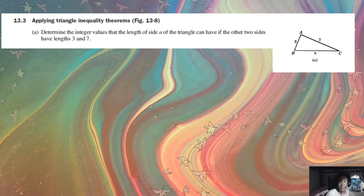Now there's a shortcut to this. In order to find the range of values for a missing side measurement in a triangle given two sides, and given that the topic is triangle inequalities, there's a shortcut to that.